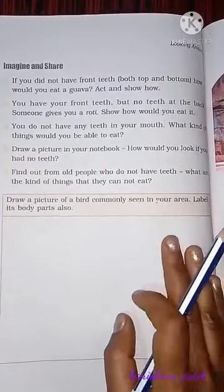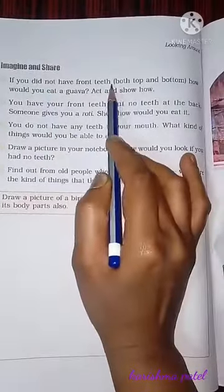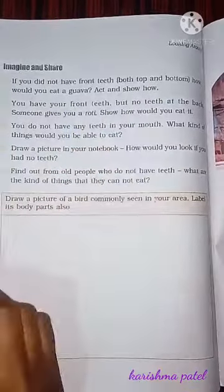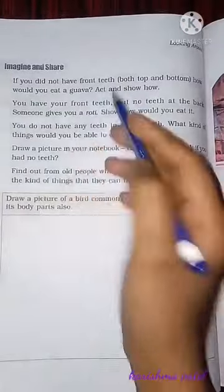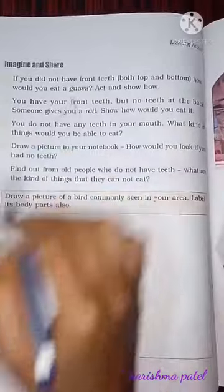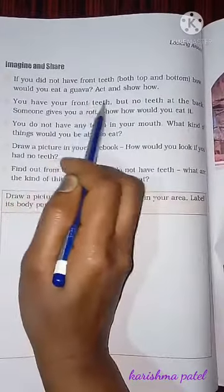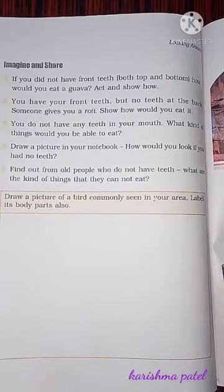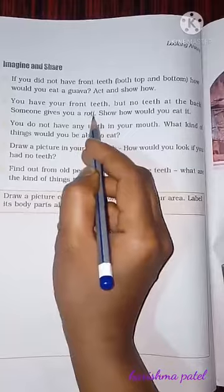Imagine and share. If you did not have front teeth — both top and bottom — how would you eat a guava? If you have front teeth on both sides you can eat a guava. But if you have front teeth and not back teeth, how would you eat a roti? We would not be able to eat the food — we could not eat the roti.